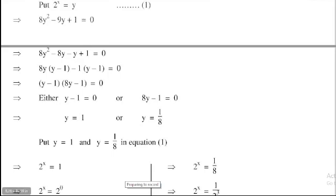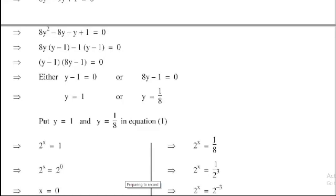2^x = 1. So 2^x = 2^0, which gives x = 0.